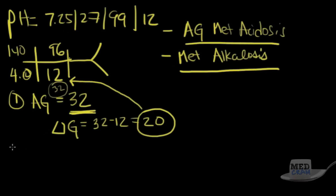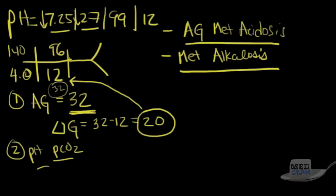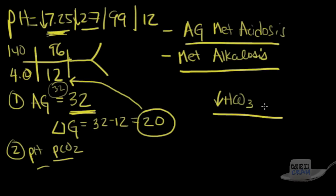The next step is to look at the pH and pCO2 direction, and then check whether Winter's formula holds. We have a metabolic acidosis and a metabolic alkalosis — the metabolic acidosis is clearly stronger since the pH is acidemic. For metabolic acidosis, Winter's formula states that for every drop of 1 in bicarb, you should also get a drop of 1 in pCO2.